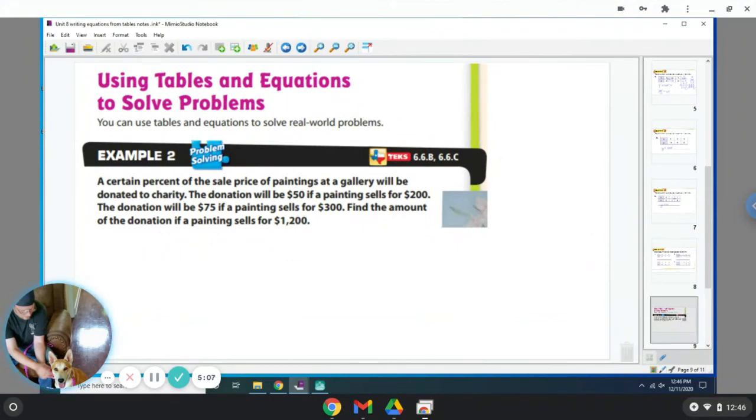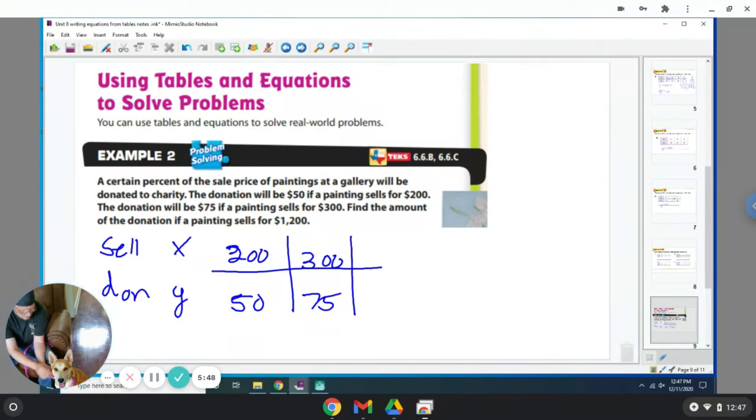All right, so example 2 is a certain percent of the sale price of paintings at a gallery will be donated to charity. The donation will be $50 if the painting sells for $200. The donation will be $75 if the painting sells for $300. Find the amount of it for $1,200. Okay. So donation depends upon the selling cost. So selling cost, selling is x, donation is y. So I can make my little table. So when they sell a painting for $200, they get a $50 donation. If they sell a painting for $300, they get a $75 donation.